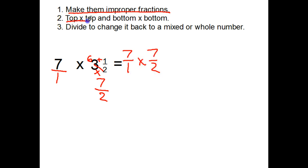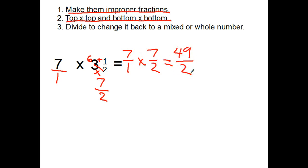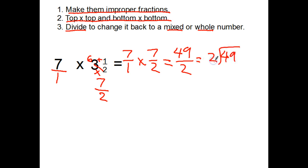Step two: multiply top times top, bottom times bottom. Seven times seven is forty-nine. One times two is two. That was pretty easy. Step three: divide to change it back to a mixed or whole number — it could come out either way. So I'm going to divide forty-nine by two.